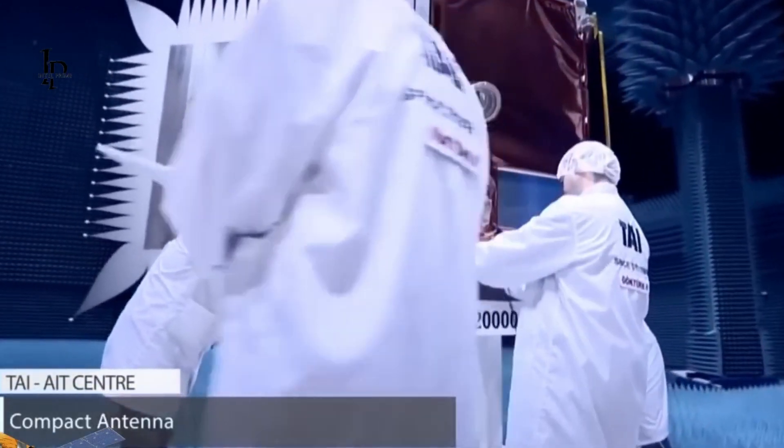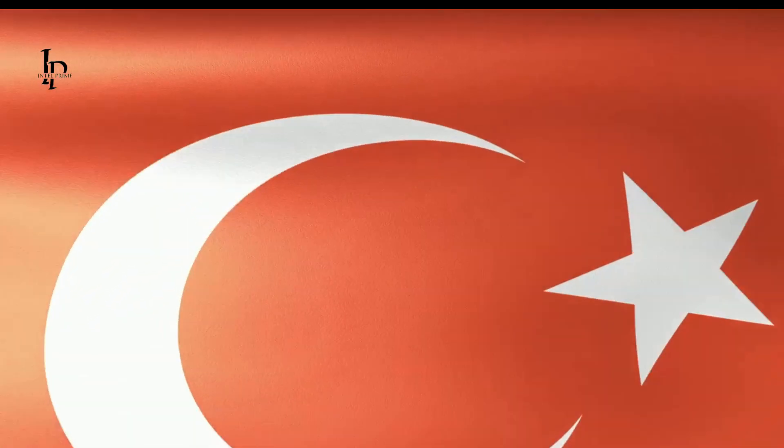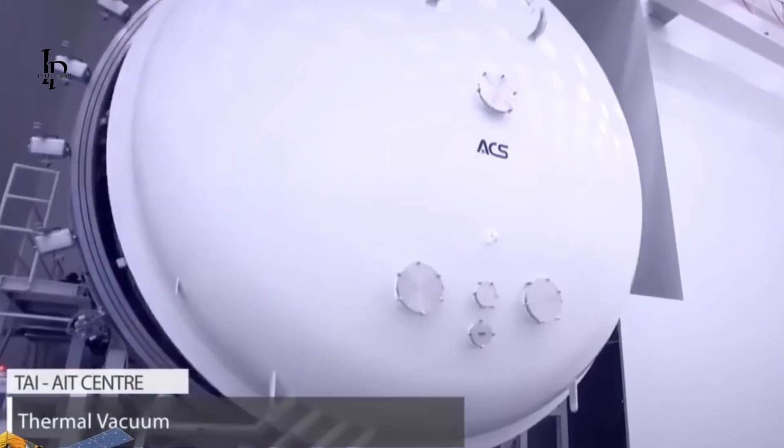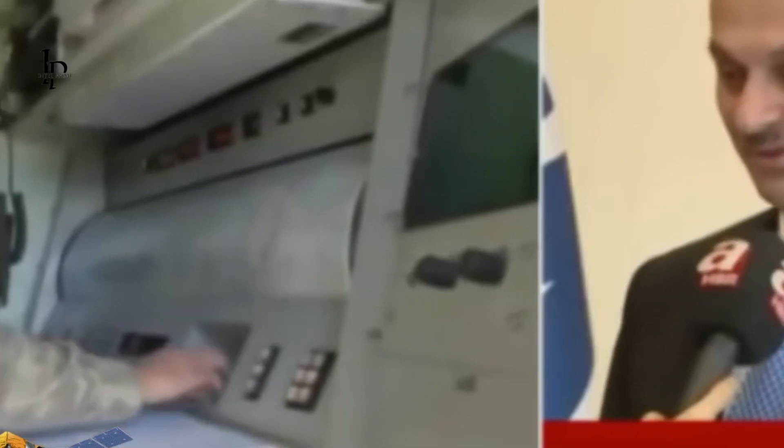The satellite's development reached its final stages at the Space Systems Assembly, Integration and Test, AIT Center, a facility built in partnership with TurkSat and the country's drone maker Turkish Aerospace Industries.